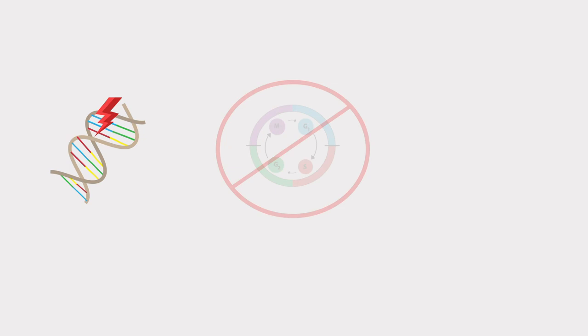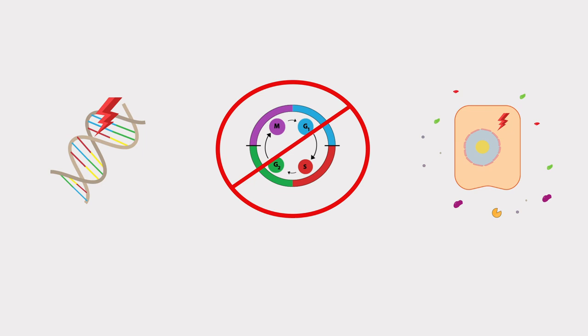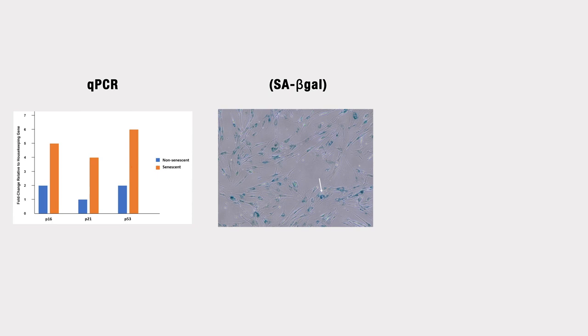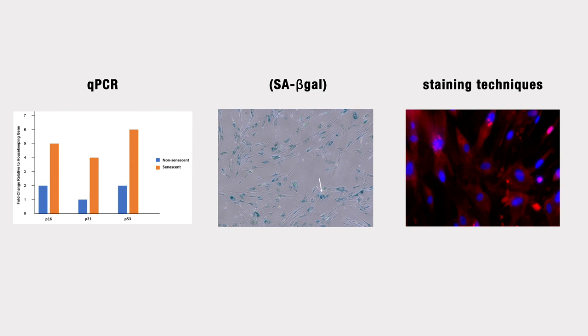Together, all of these different methods of measuring senescence induction help our research team gain a more complete picture of the cell model we've created. With any senescence experiment, it's important to use multiple analysis methods to assess senescence induction. We do not yet have one perfect marker or assay to identify senescent cells, so we have to rely on multiple methods like qPCR, SA-beta-gal, and staining techniques to confirm our senescence model.